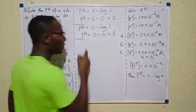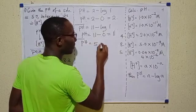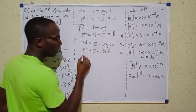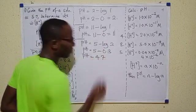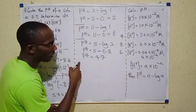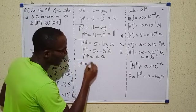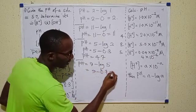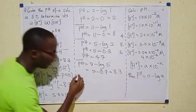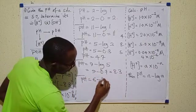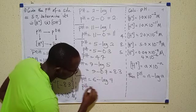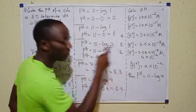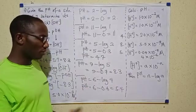If the options are all in the same range, you'll need to solve fully. In case 3: pH equals 5 minus log 2, and log 2 is 0.3, so pH equals 4.7. In case 4: pH equals 9 minus log 5, and log 5 is 0.7, so pH equals 8.3. In the last case: pH equals 6 minus log 4, and log 4 is 0.6, so pH equals 5.4.